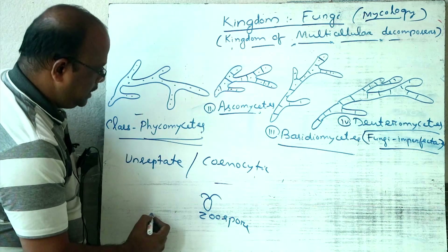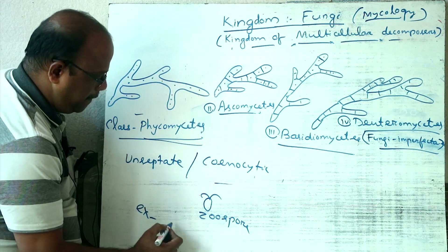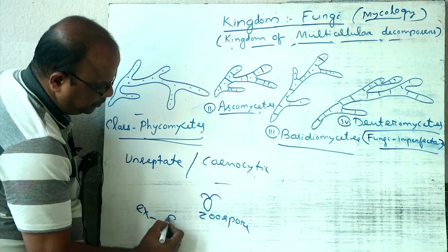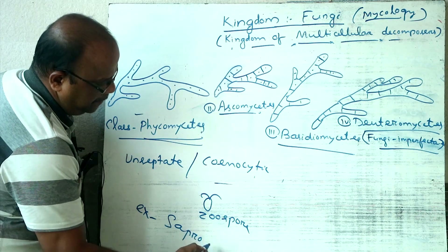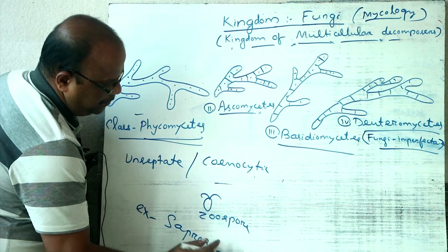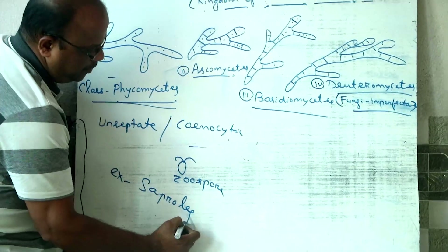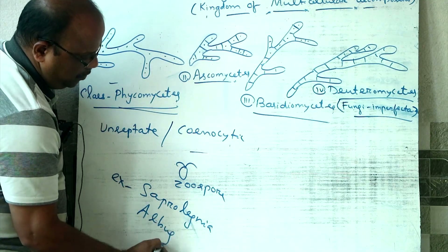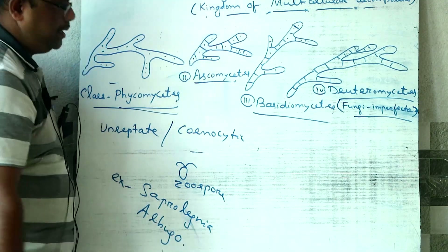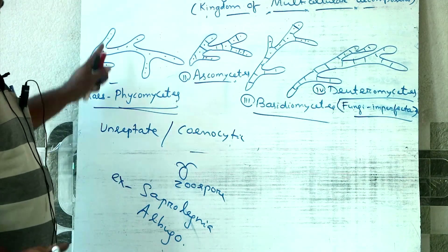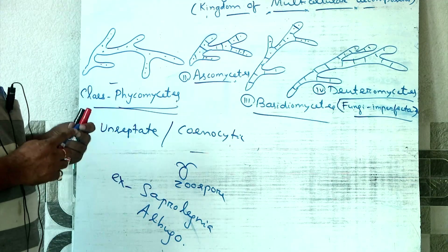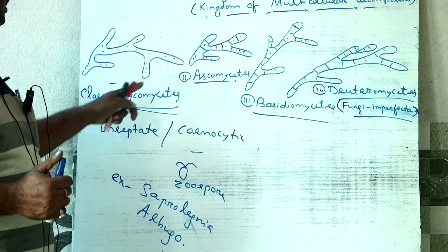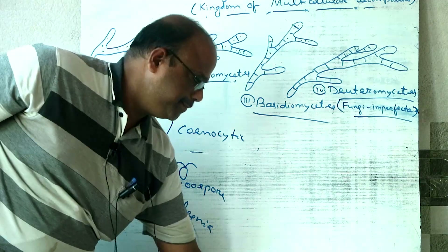The common examples of Phycomycetes are Saprolegnia and Albugo. This is the lower fungi class, in which mycelium is unseptate — so this is the Phycomycetes class.